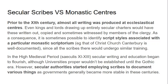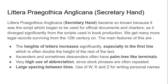In the high medieval period — from the 11th to the 13th century — secular writing and education began to flourish, although universities proper wouldn't be established until the Gothic era. Secular authorities started to employ scribes to document various things as governments became more stable. This brings us to the use of Proto-Gothic script in government documentation: Littera Pre-Gothica Anglicana, or secretary hand, which began to be used for official documents and charters and diverged significantly from the scripts used in book production.